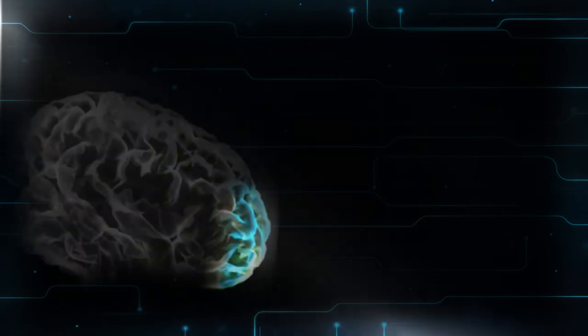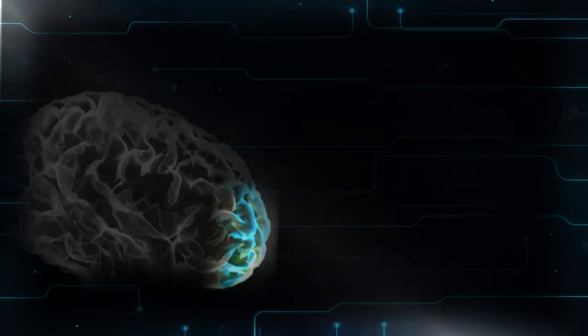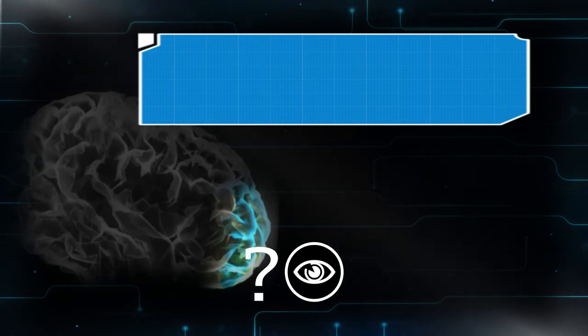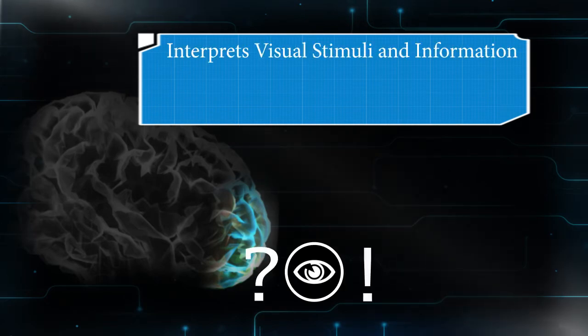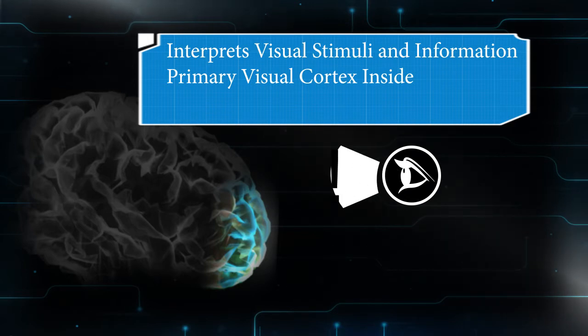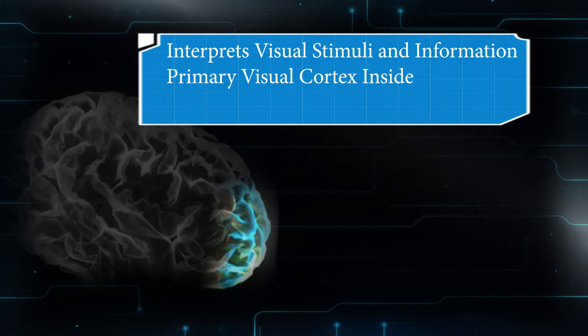Finally, the occipital lobe is located at the back portion of the brain. What are its functions? It interprets visual stimuli and information. The primary visual cortex receives and interprets information from the retinas of the eyes.